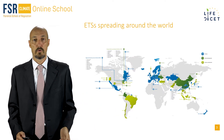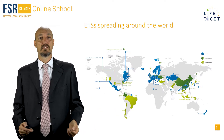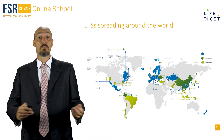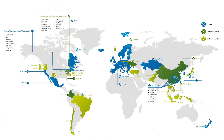Following Europe, many emission trading systems were born and ETSs are spreading around the world. This map shows in blue the jurisdictions where ETSs are currently in place, in green those where they are under construction, and in yellow under consideration.